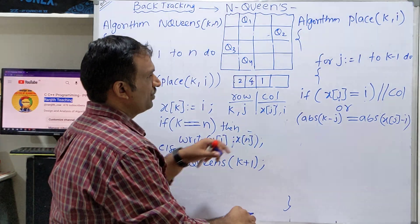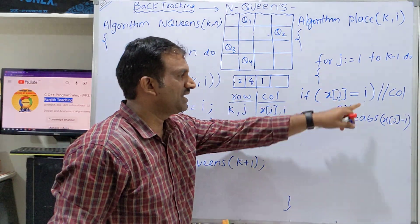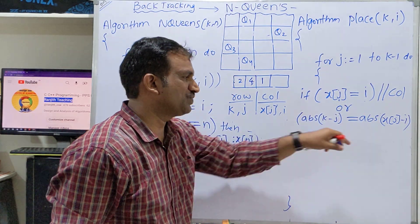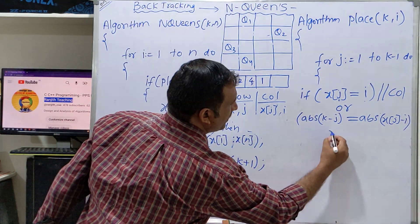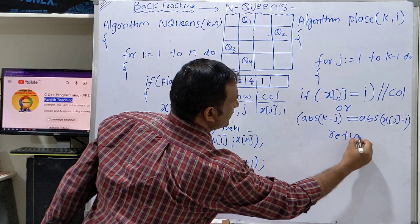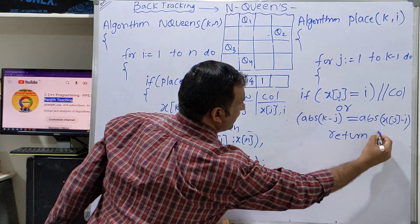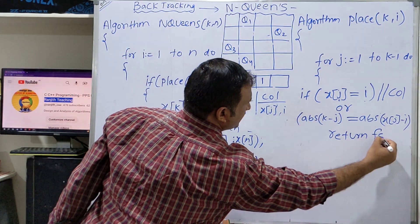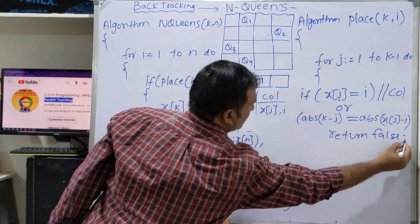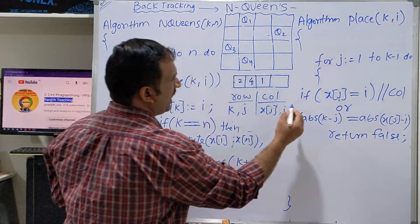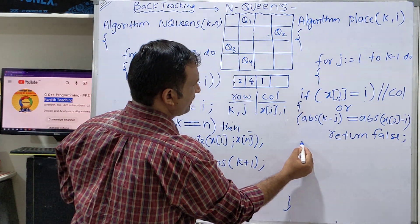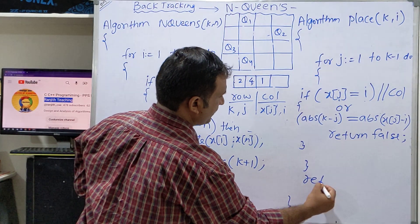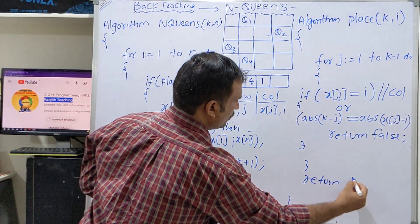So the Place algorithm checks both column and diagonal conditions. If either condition is true, we cannot place the queen — return false. After the loop completes without conflicts, return true. That means we can place the queen in the valid position.